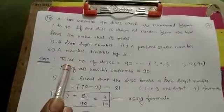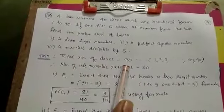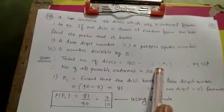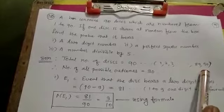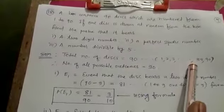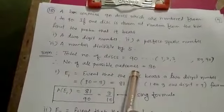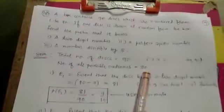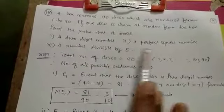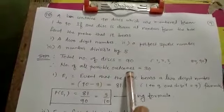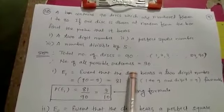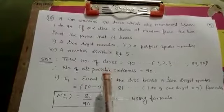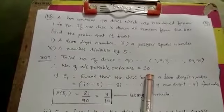So according to the given conditions, the total number of discs are 90 and they are numbered from 1 to 90. I have mentioned here 1, 2, 3, up to 89, 90. These are the numbers given on the disc. So the number of all possible outcomes is 90.